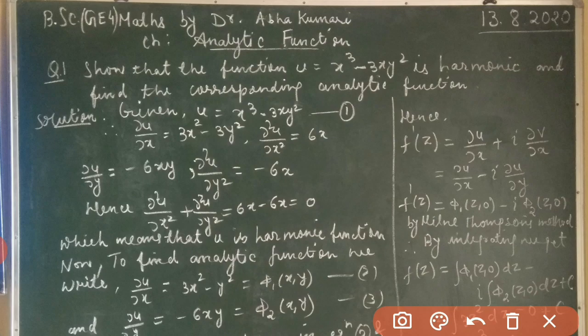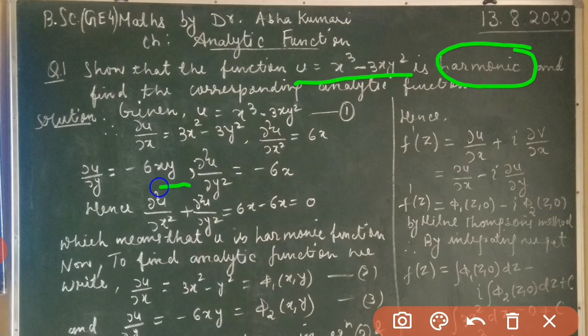Our first question is: show that the function u = x³ - 3xy² is harmonic, and then find the corresponding analytic function. To prove that a function is harmonic, we need to show that the sum of the second-order partial derivatives equals zero — that is, ∂²u/∂x² + ∂²u/∂y² = 0.